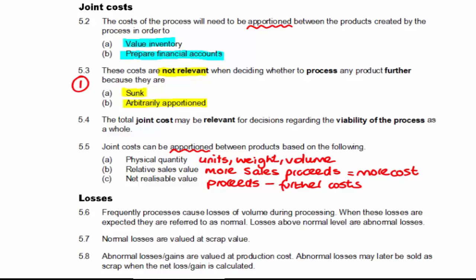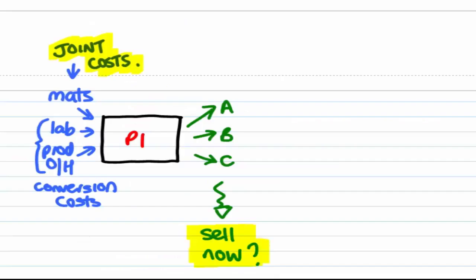The second decision is about process viability. And if we're considering whether the process is viable at all, we need to think about the total cost going into that process and the proceeds that we're going to get from it. So if we wanted to answer the question, is it worthwhile doing process one at all, then we'd have to cost out the joint costs and compare it with the proceeds that we get from selling products A, B, and C.